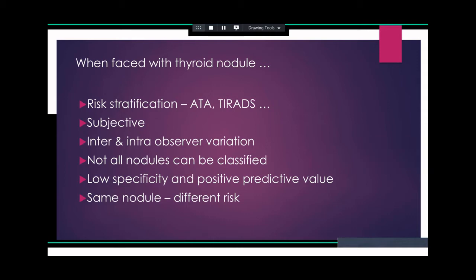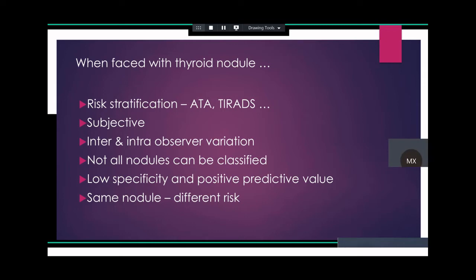Recently, there was a new article published in the Journal of Endocrine Society concluding that ACR TIRADS may often be no better than random selection. There are a lot of controversies in using these guidelines, as they have very low specificity and positive predictive value. If you use different classification systems for the same nodule, you might end up getting different risk. For example, a hypoechoic solid nodule with irregular margins is high suspicion by ATA with 70-90% probability of malignancy, but TIRADS gives category 4 with about 44-72% probability.